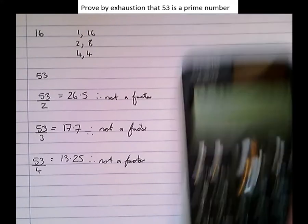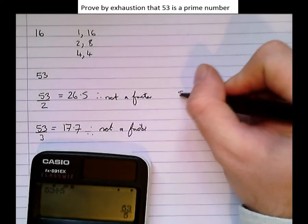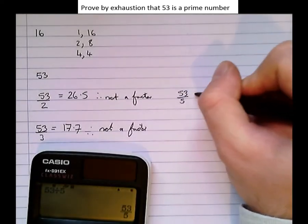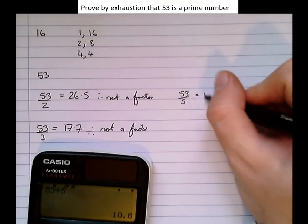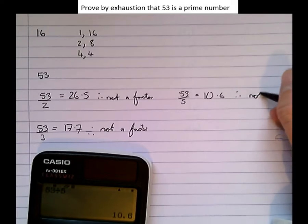53 divided by 5 equals 10.6, therefore not a factor.